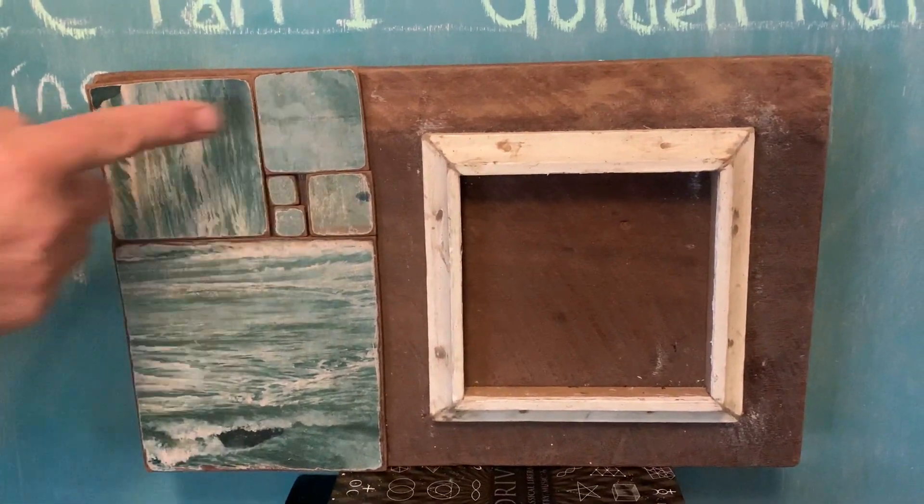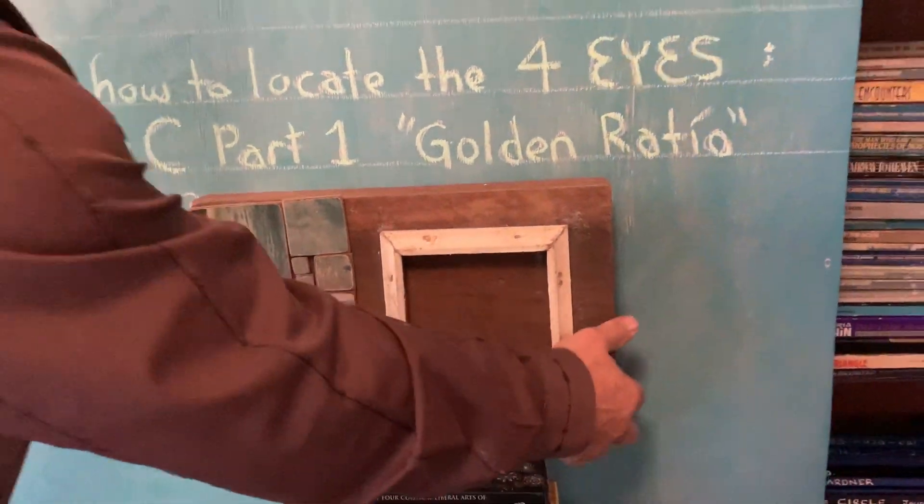So that generates a Fibonacci sequence. 1, 1, 2, 3, 5, 8. Okay, so that's that one there.